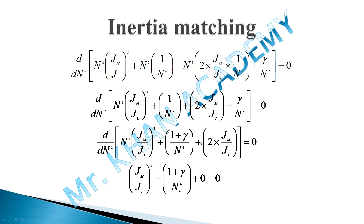Differentiating: d/d(n²) of n² gives 1, so (Jm/Jl)² remains. The term (1+γ)/n² differentiates as −1/x², giving −(1+γ)/n₀⁴. The constant 2·Jm/Jl differentiates to zero. Setting equal to zero: (Jm/Jl)² − (1+γ)/n₀⁴ = 0.